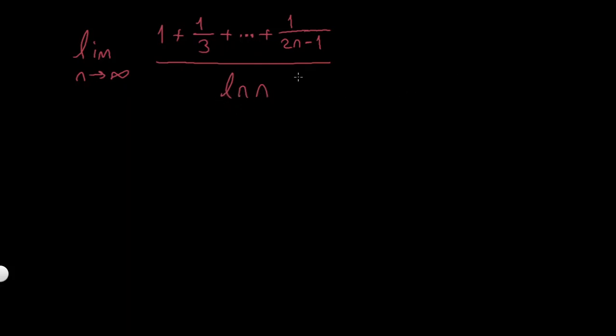so in general we have just infinity over infinity and therefore I can just pick bn equal to ln n and this indeed goes to infinity and it's increasing...